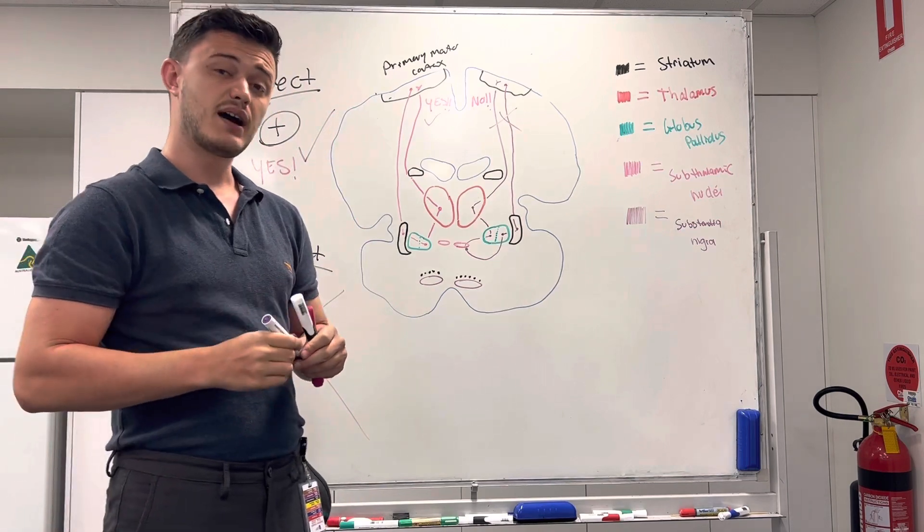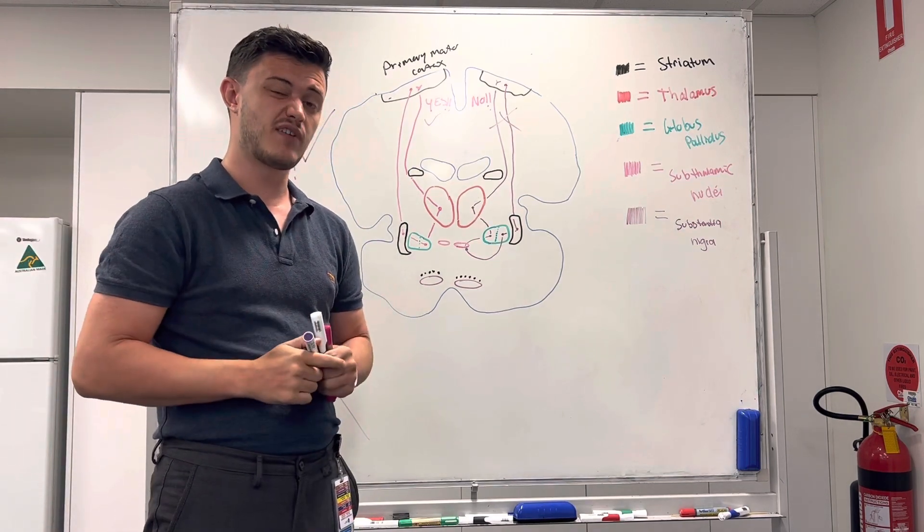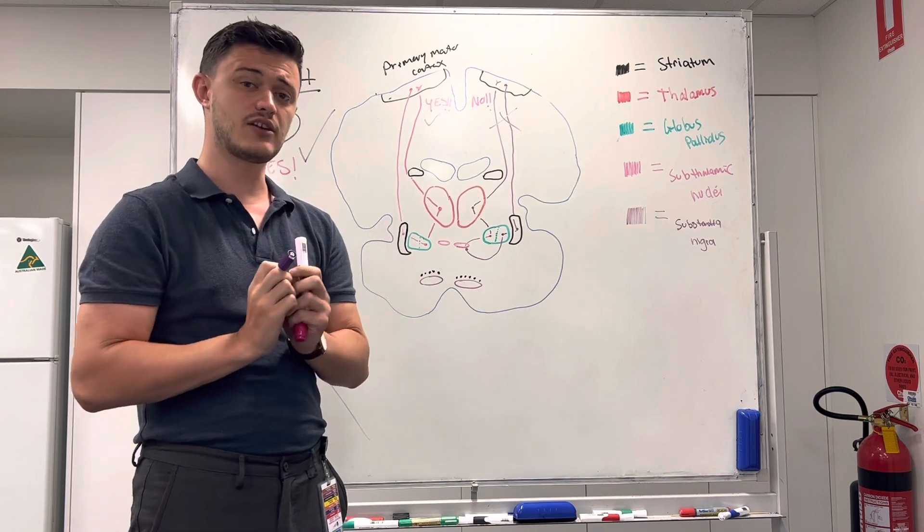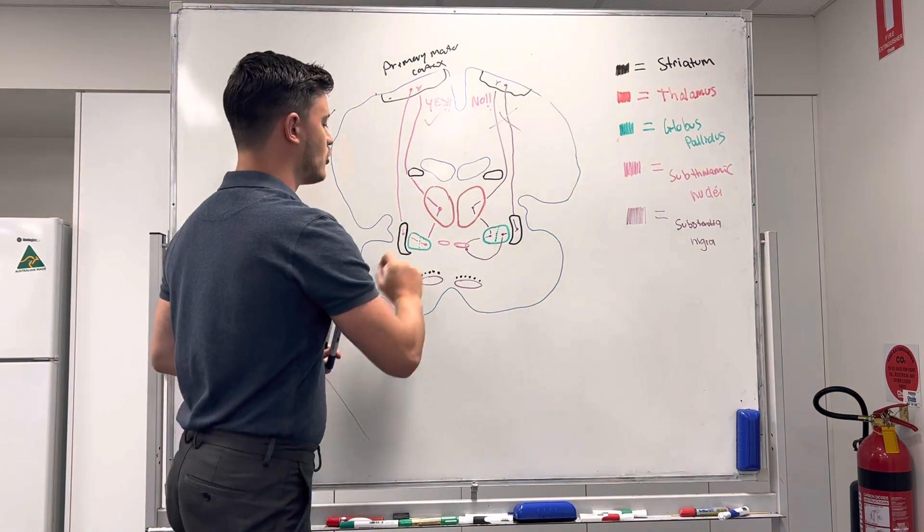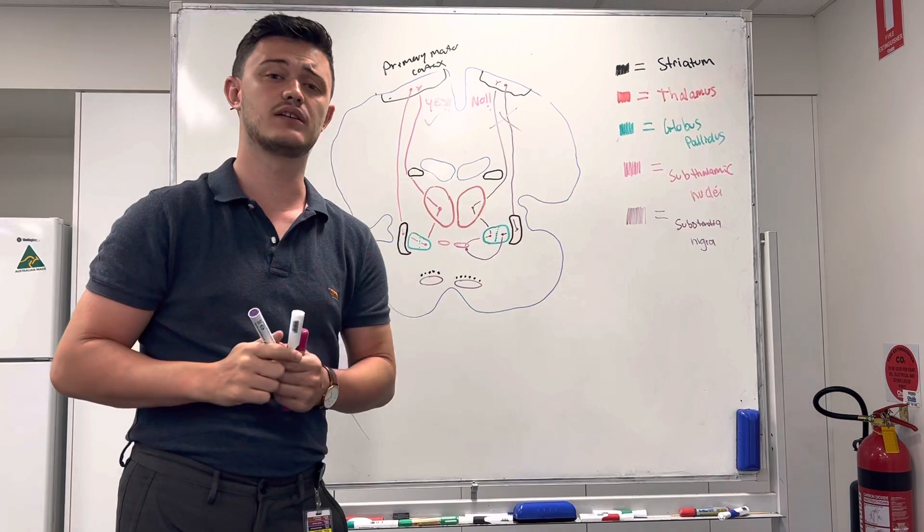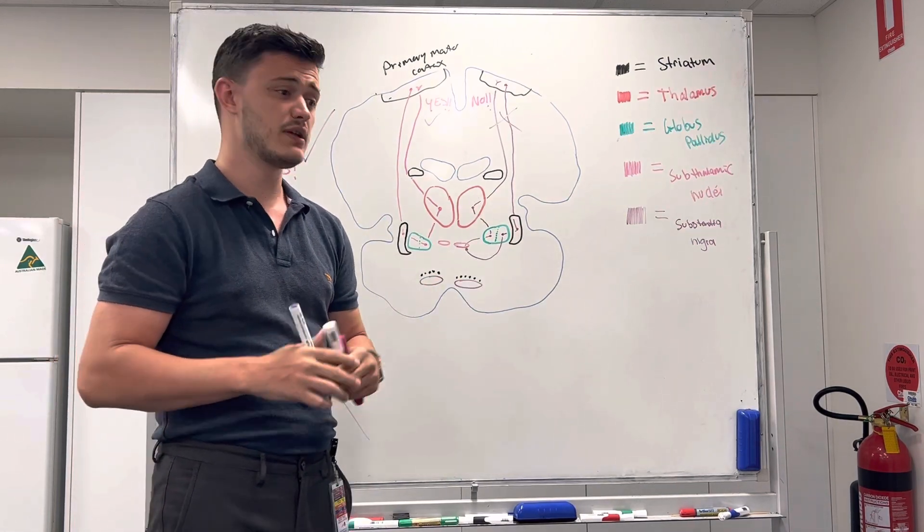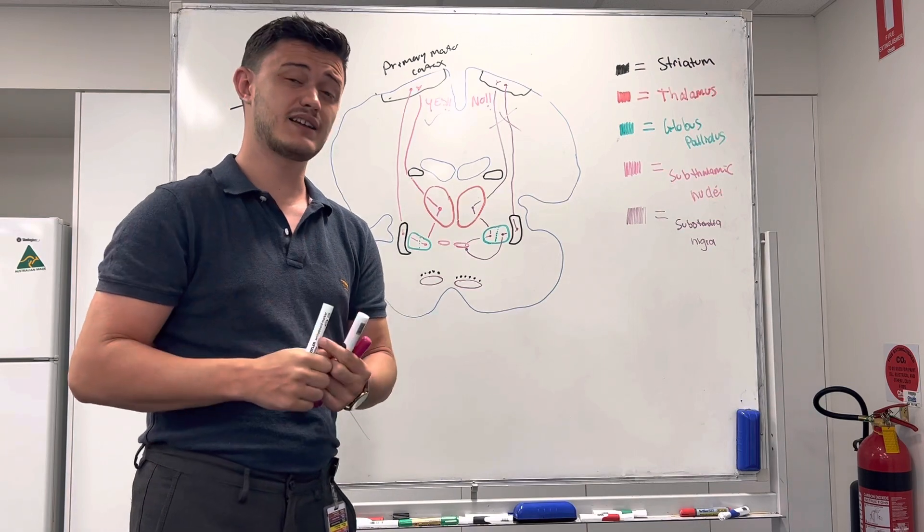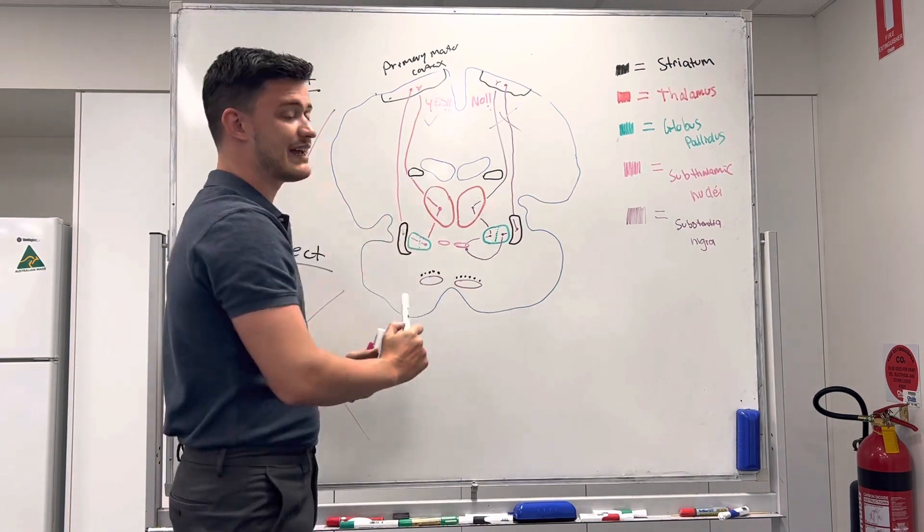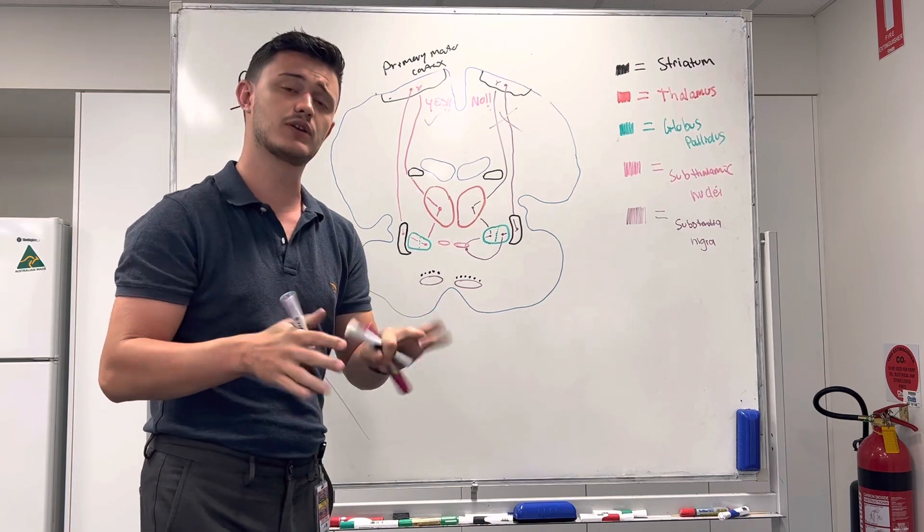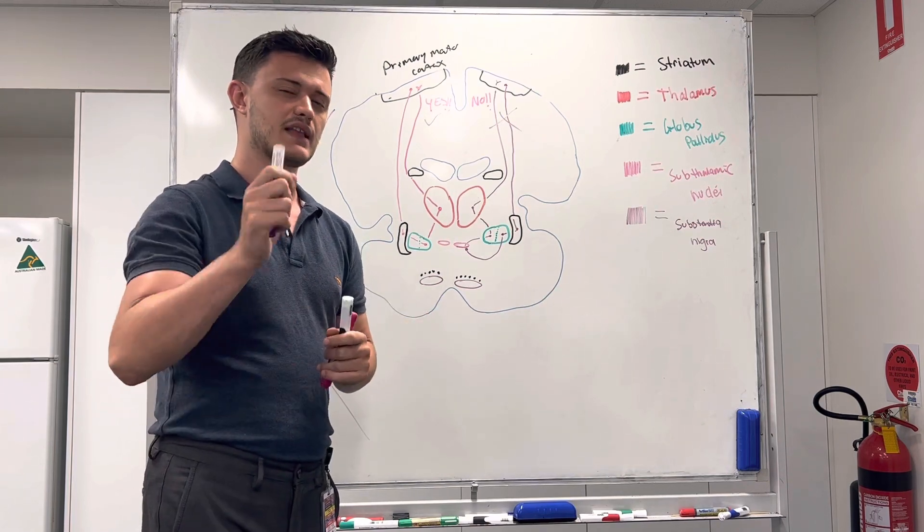And so, in the case of Parkinson's patients, what you're going to find is that there is a significant decrease in dopamine-producing neurons inside the substantia nigra. So, what that's going to mean is that, well, if we don't have dopamine in the case of Parkinson's patients, they can't regulate this yes and no pathway. So, instead, they're getting yes, no, yes, no, yes, no. That's what we call a resting tremor. And that's really, really important.